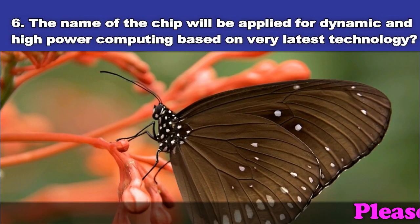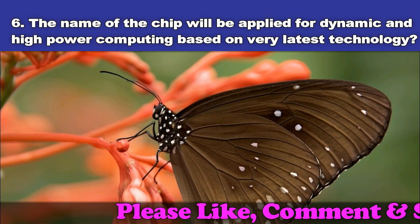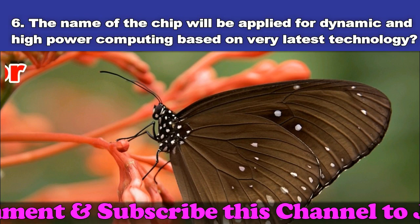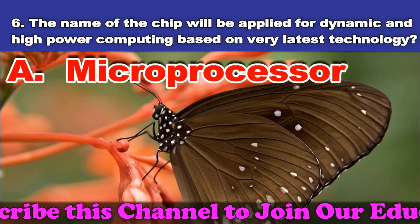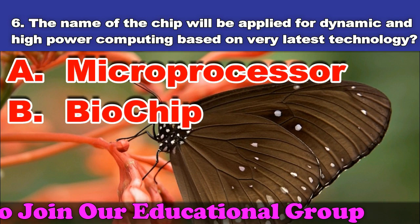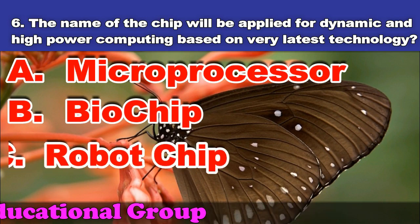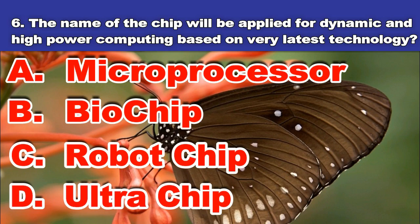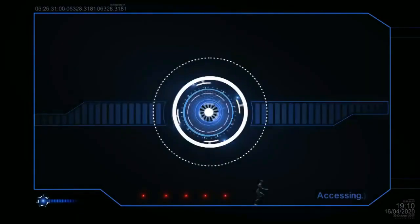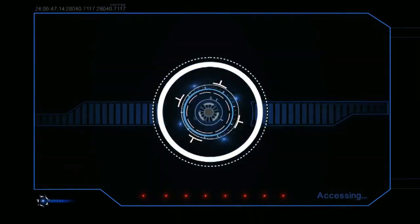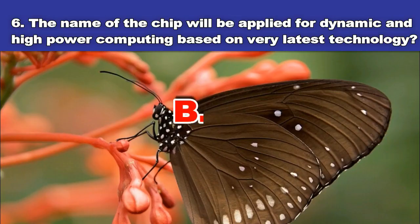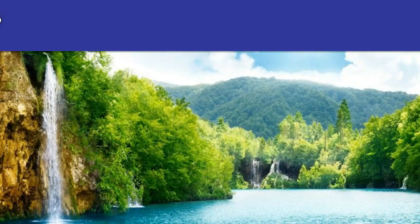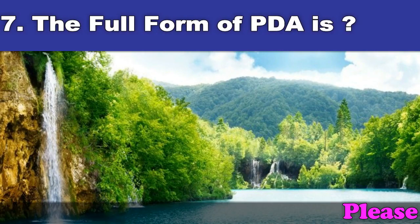Sixth question: The name of the chip applied for dynamic and high power computing based on very latest technology. A. Microprocessor. B. Biochip. C. Robot chip. D. Ultra chip. And the answer is biochip.